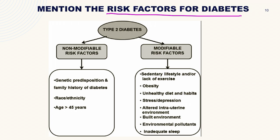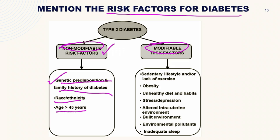The risk factors for diabetes are of two types: non-modifiable and modifiable. Non-modifiable risk factors for type 2 diabetes include genetic predisposition and family history — the most significant risk factor — followed by race or ethnicity and age greater than 45 years. Modifiable risk factors include sedentary lifestyle or lack of exercise, obesity, unhealthy diets and habits, stress and depression, altered intrauterine environment, environmental pollutants, and inadequate sleep.